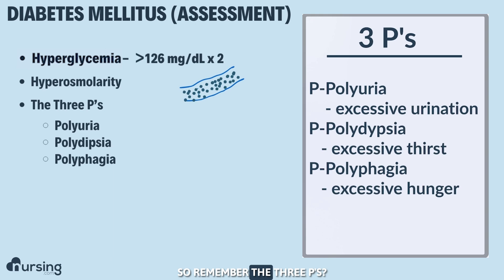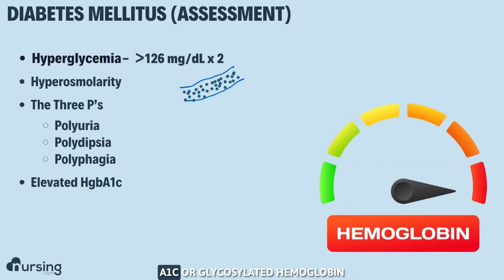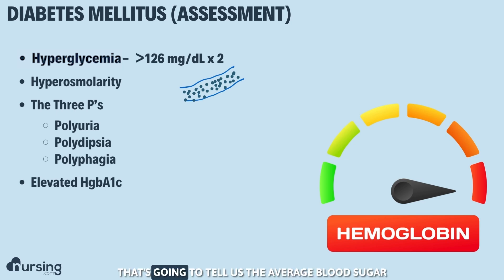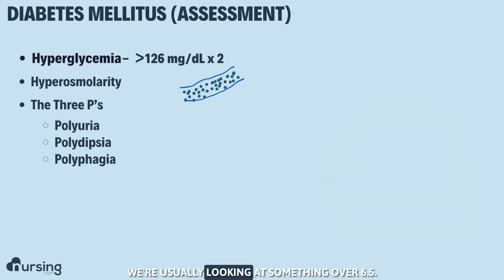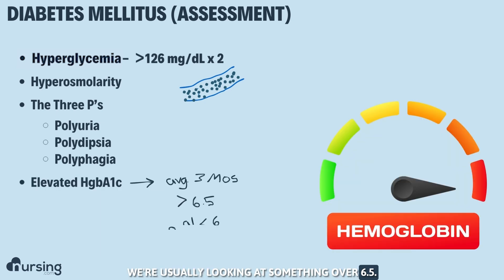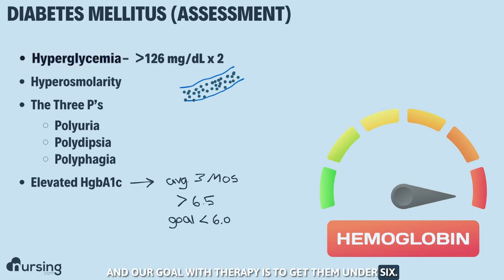The other diagnostic criteria we use is hemoglobin A1C, or glycosylated hemoglobin. That's going to tell us the average blood sugar over the last three months. In diabetic patients, we're usually looking at something over 6.5, and our goal with therapy is to get them under 6.